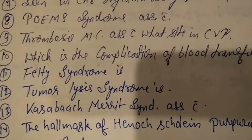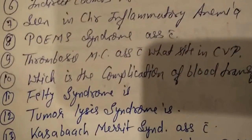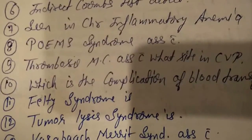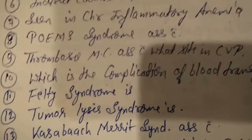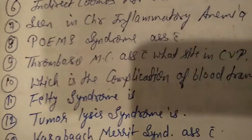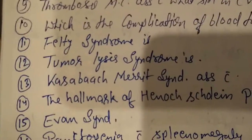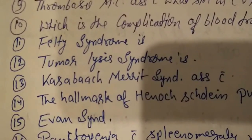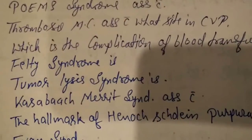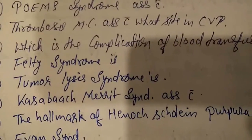Tenth question: the most common complication of blood transfusion is hyperkalemia — remember, hyperkalemia. Eleventh question: Felty syndrome is seen in rheumatoid arthritis. It is a triad consisting of neutropenia and splenomegaly with rheumatoid arthritis.